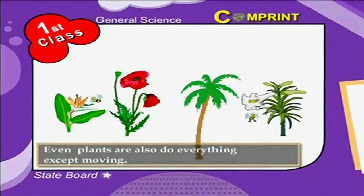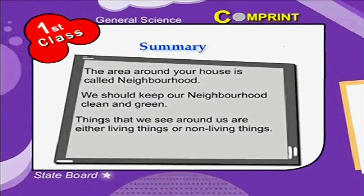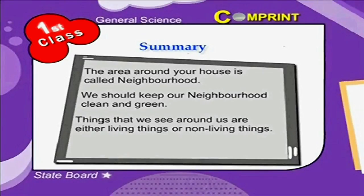Even plants also do everything except moving. Let us summarize the points. The area around your house is called a neighborhood. We should keep our neighborhood clean and green. Things that we see around us are either living things or non-living things.